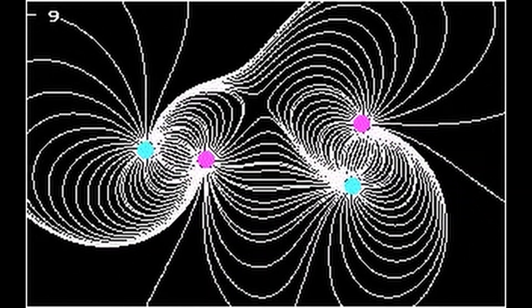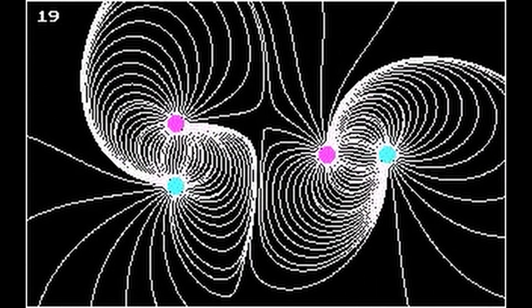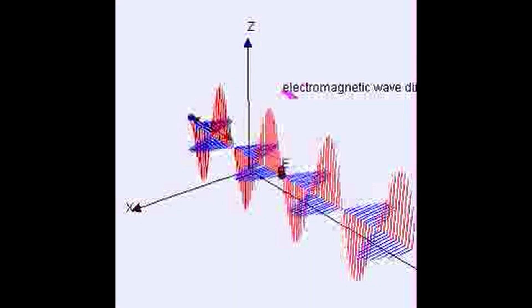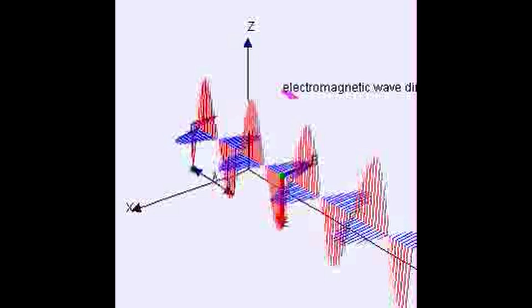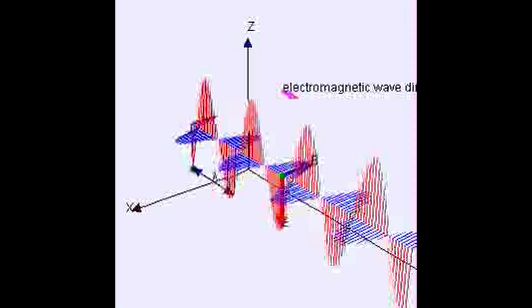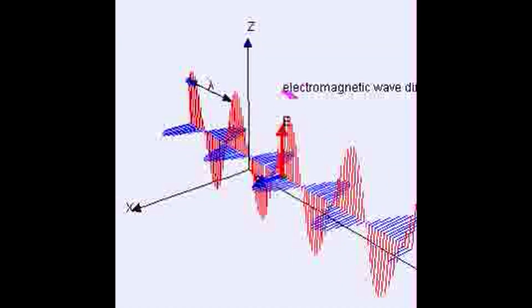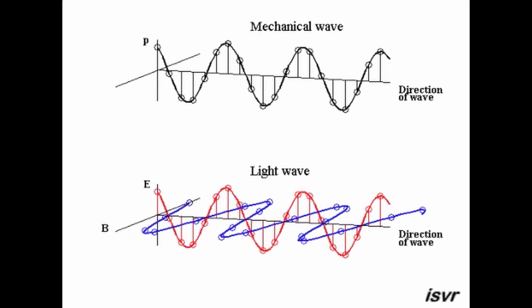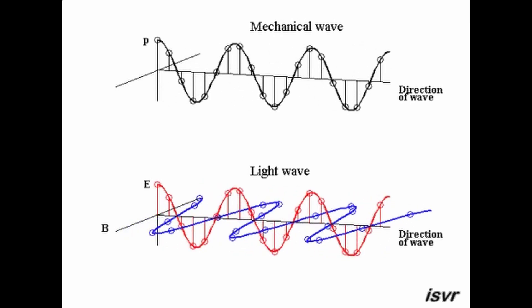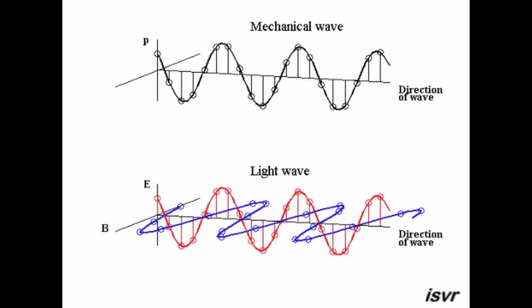In particle physics, the fundamental interaction of electromagnetism refers to the interaction between electrically charged particles and electromagnetic fields. This interaction is one of the four fundamental interactions that govern the behavior of subatomic particles in the universe and is responsible for a wide variety of phenomena observed in nature. In general terms, the electromagnetic interaction is governed by Maxwell's equations, which describe the propagation of electric and magnetic fields through space. These equations establish that electric and magnetic fields are closely related to each other and can produce and modify each other.